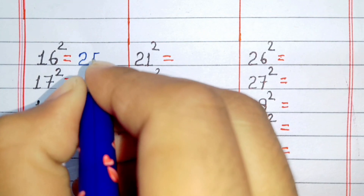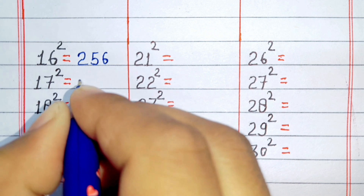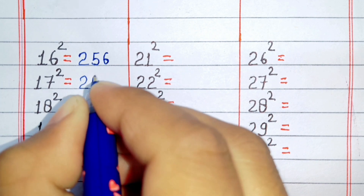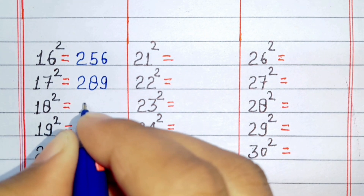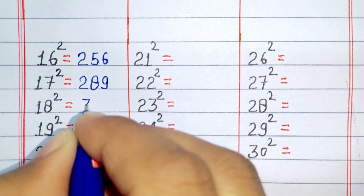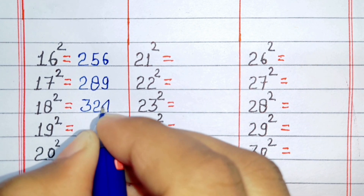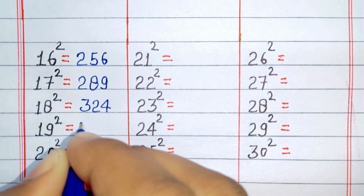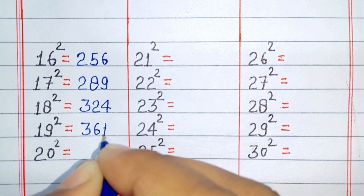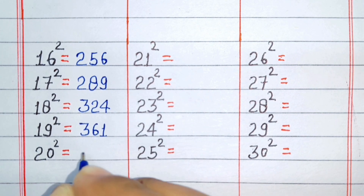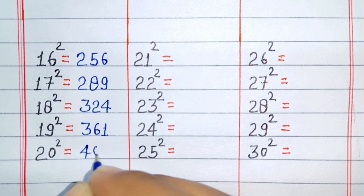Square of 16 is 256. Square of 17 is 289. Square of 18 is 324. Square of 19 is 361. Square of 20 is 400.